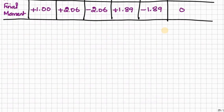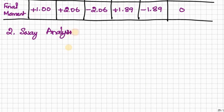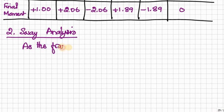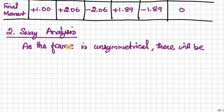The next step is Sway Analysis. In sway analysis, as the frame is unsymmetrical, there will be sway of the frame and sway correction is to be applied to the above moments — that is, the non-sway moments — using this sway analysis. That is what we are going to do in the second step.